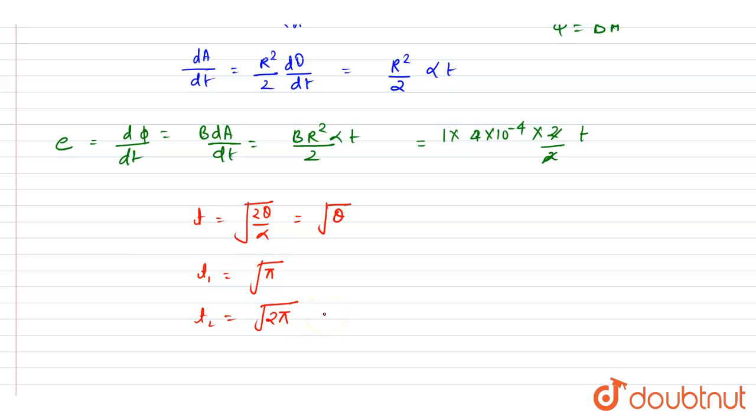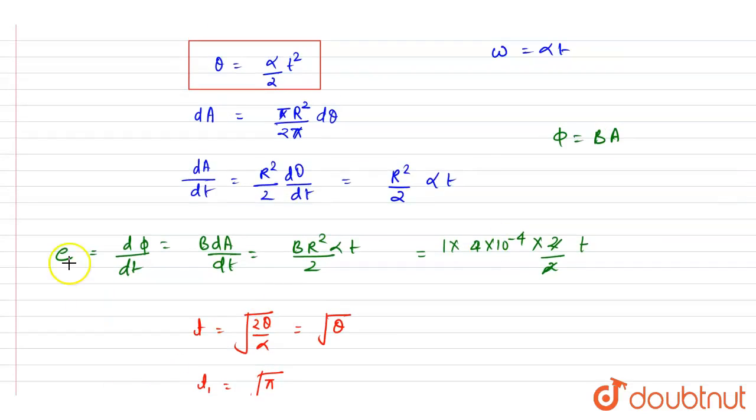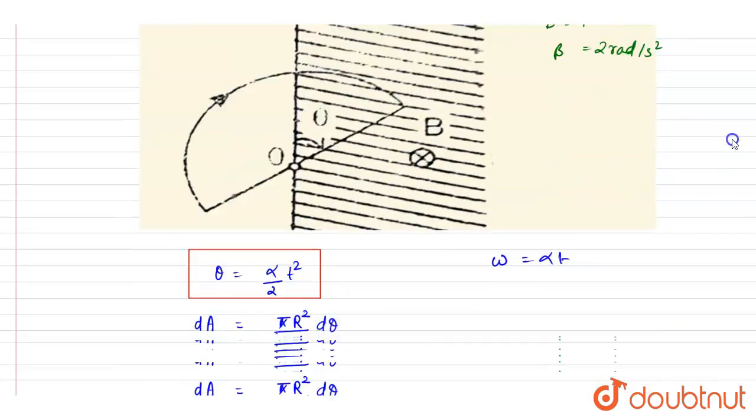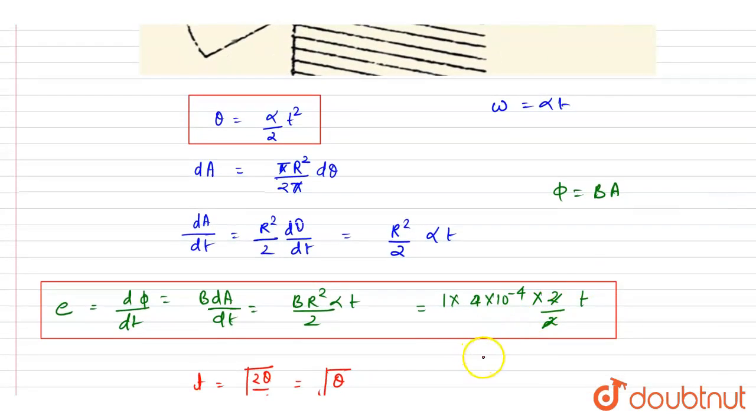If you see here, we got the induced EMF value as a function of time as this. And now if you compare here the equation, this and this, you can see very clearly that x equals 4.